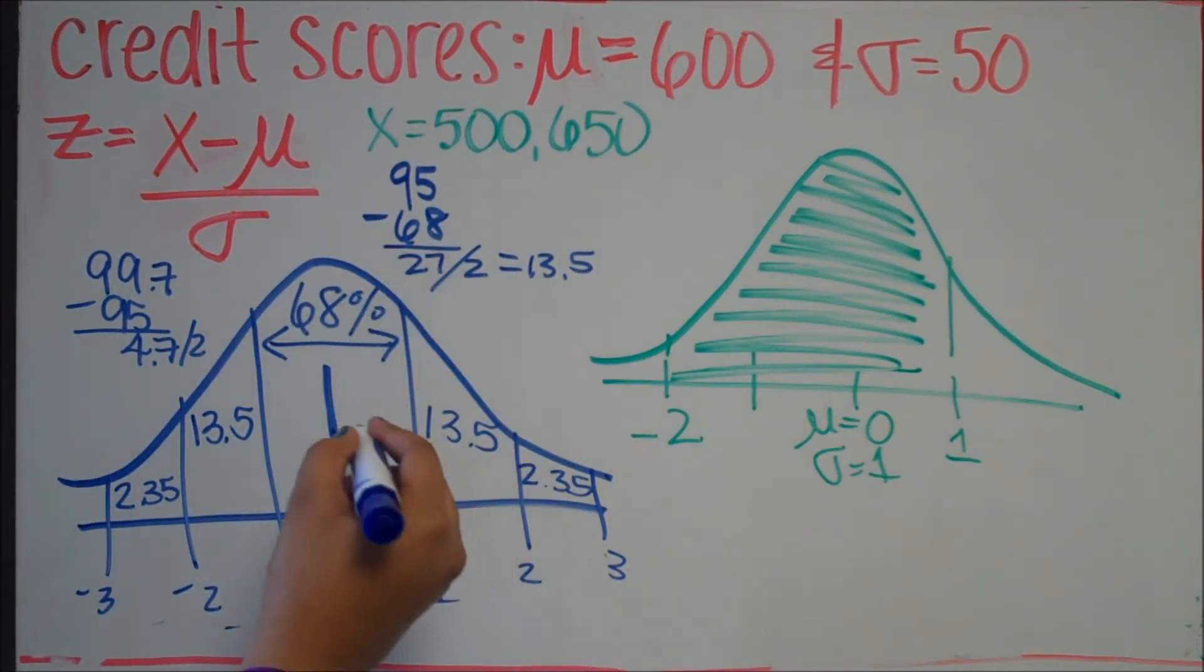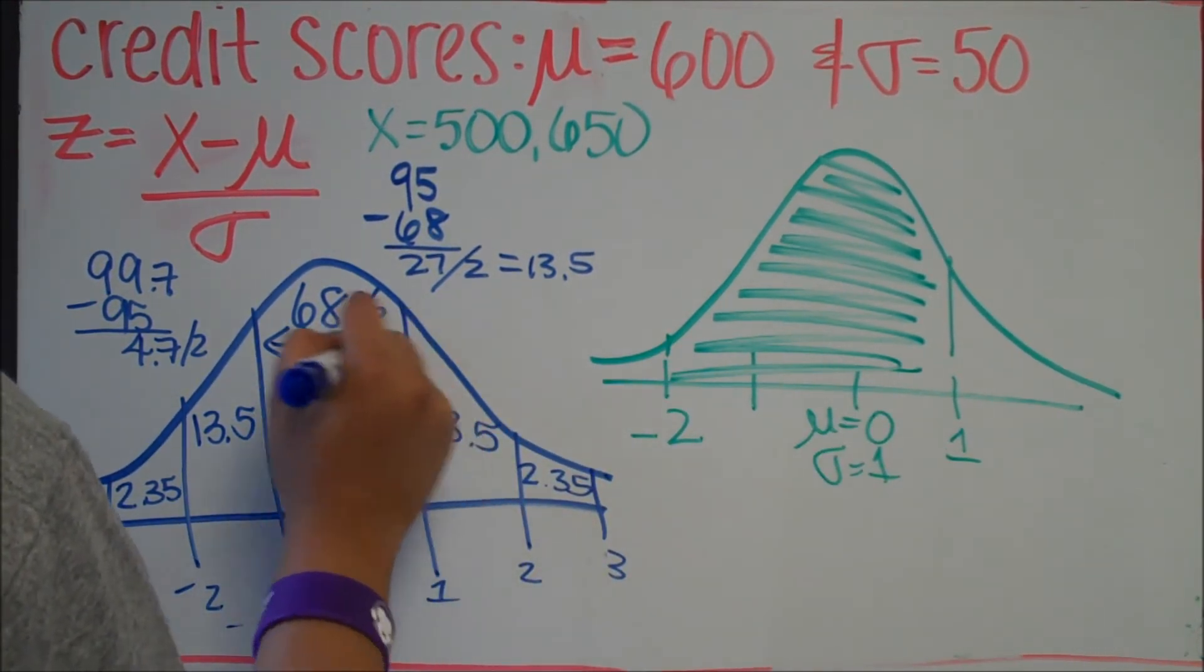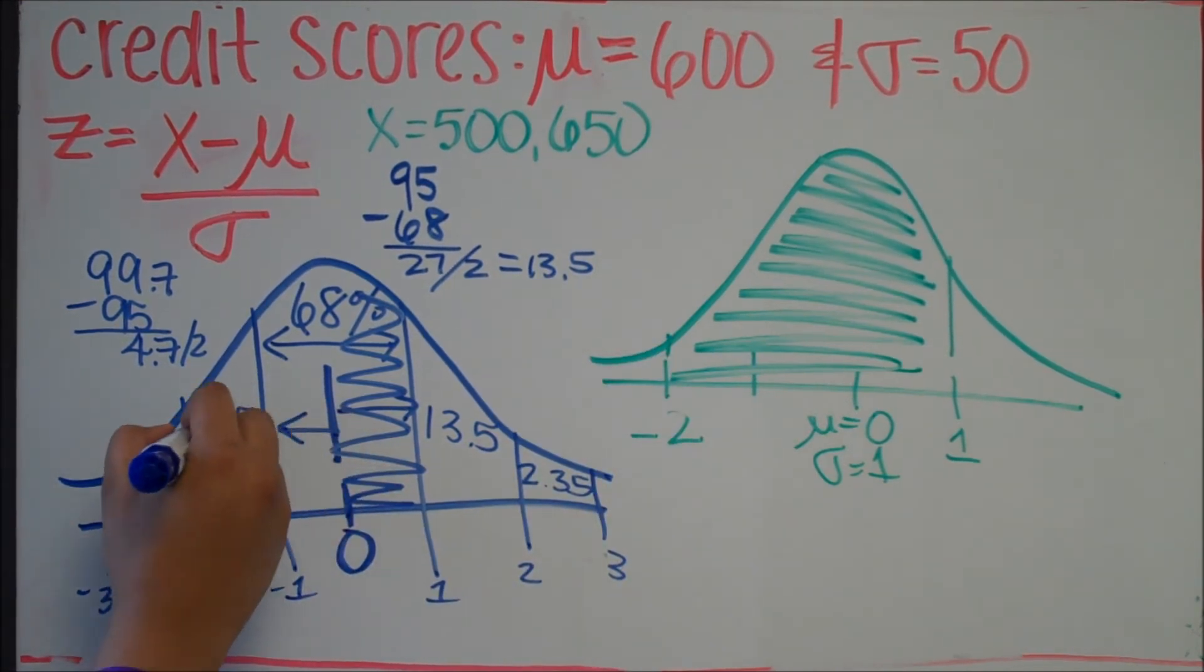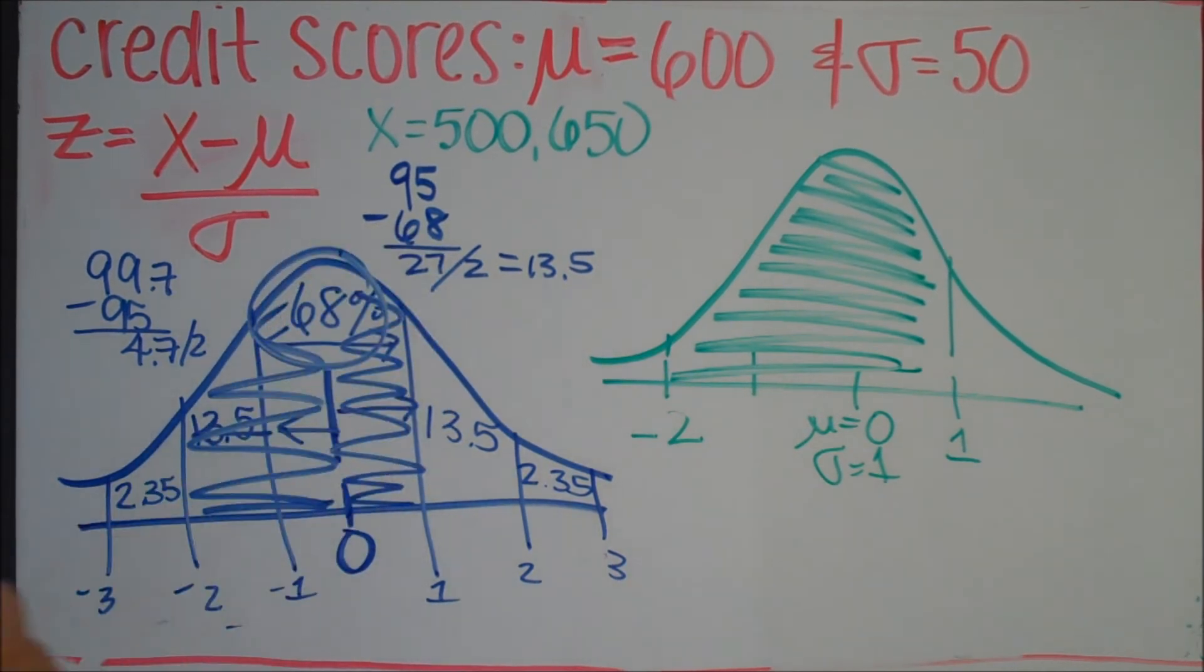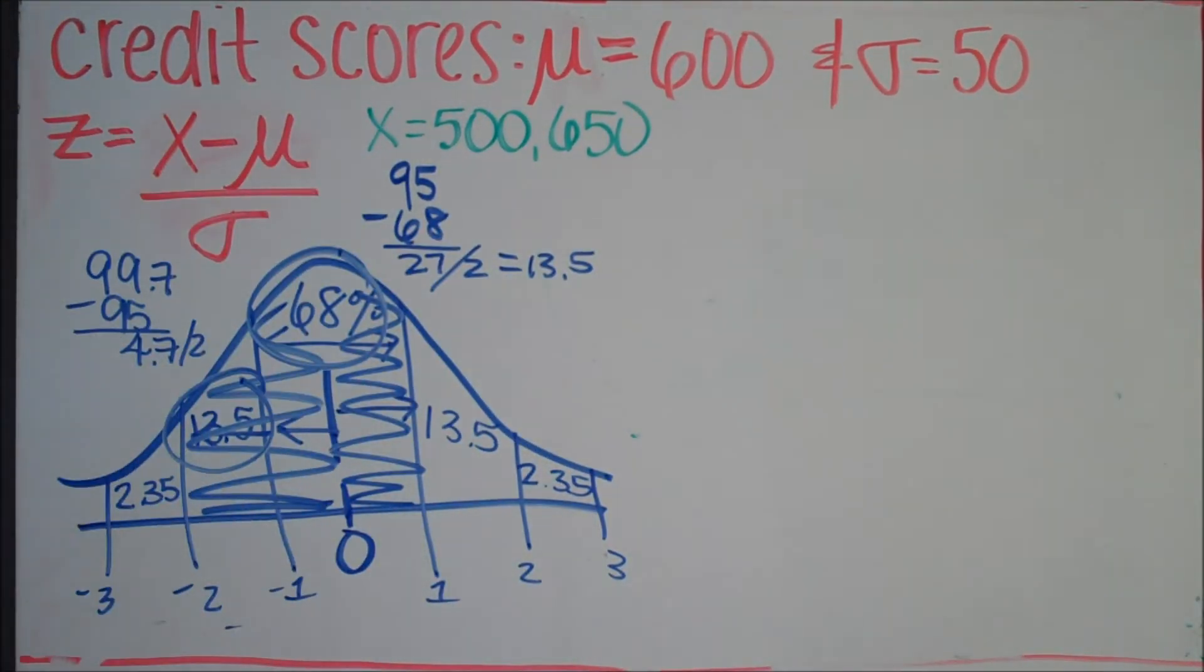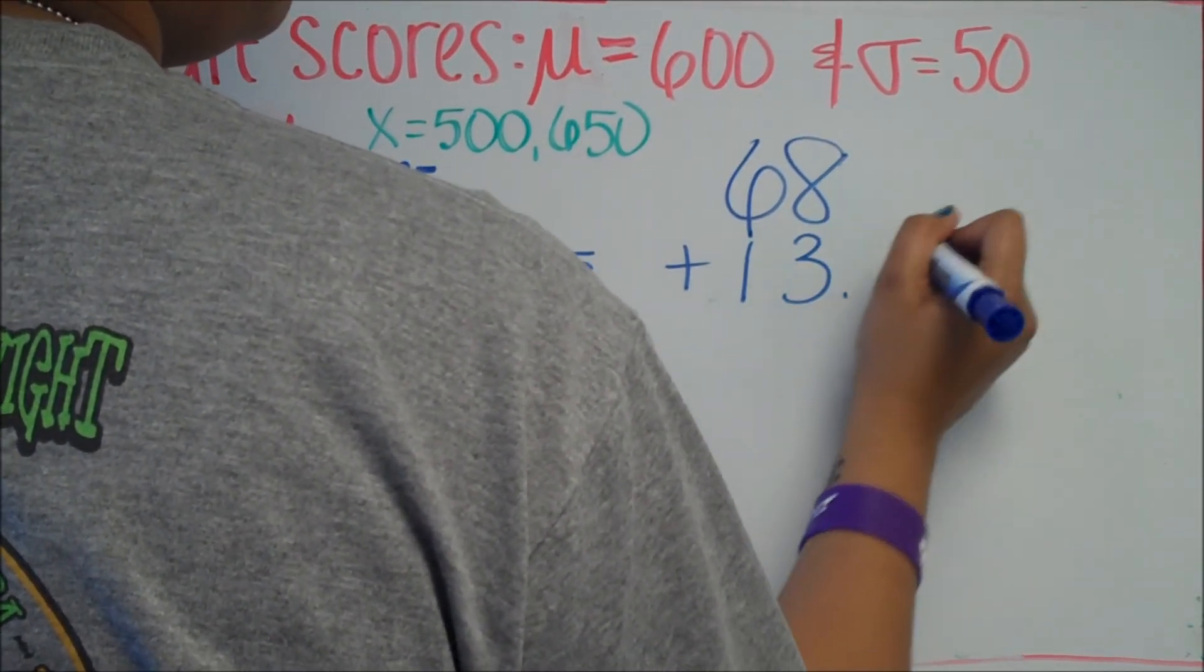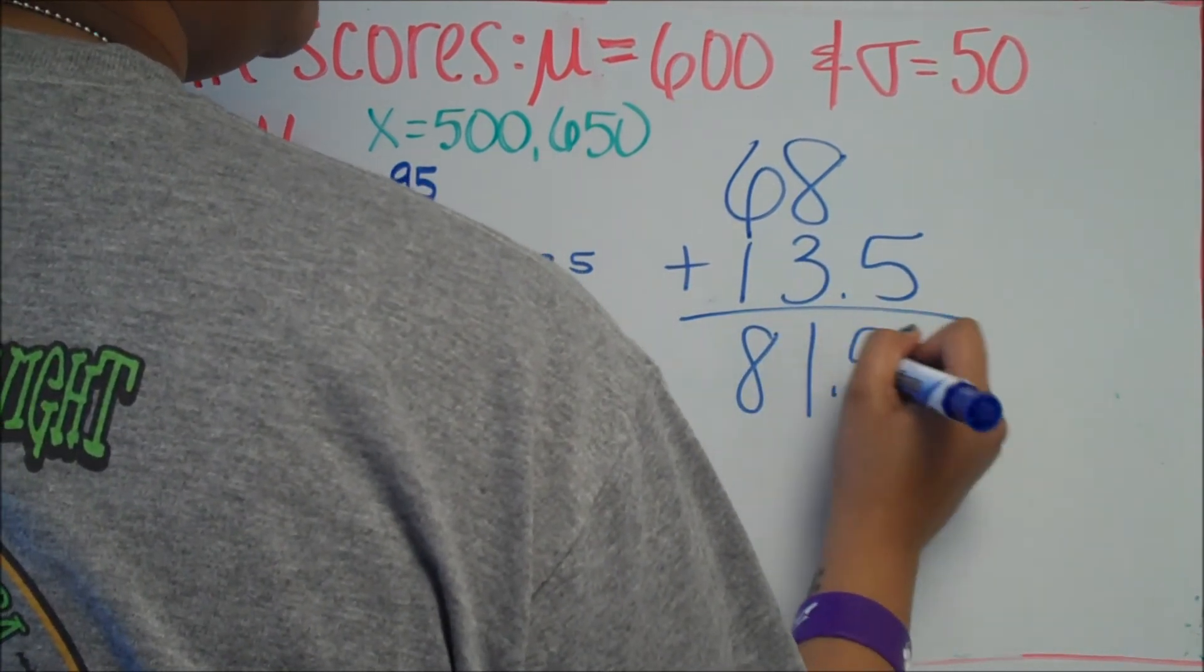So we want to go 1 standard deviation to the left, so we want this area. And then 1 standard deviation to the right, so we want this and this. So we're going to add this entire 68% plus the 13.5%. So 68 plus 13.5, you should get 81.5%.